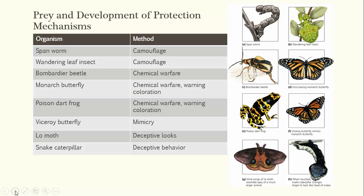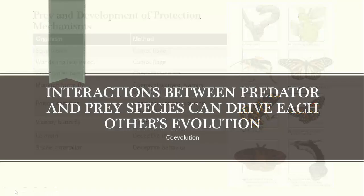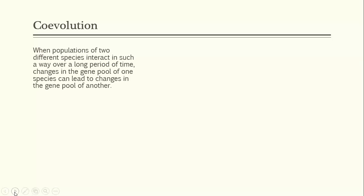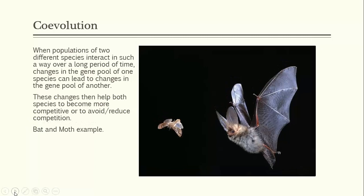Interactions between predator and prey species can actually drive the evolution of those organisms — this is the concept of co-evolution. When populations of two different species interact over a long period of time, changes in the gene pool of each species can lead to changes in the other. The bat and moth example illustrates this: the bat evolves traits that increase its chance of eating a meal, while the moth evolves traits to help it avoid being eaten.